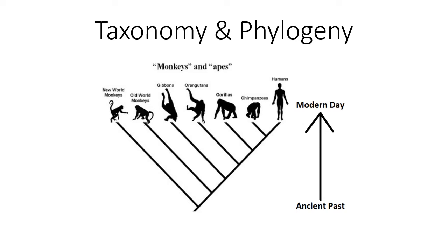Taxonomy and phylogenies are essential for understanding the relationship between animals — different species, different populations — and how we organize and understand them. Taxonomy can be thought of as a way of naming and grouping organisms, while phylogenies are a way to understand their relationships with evolution in mind.